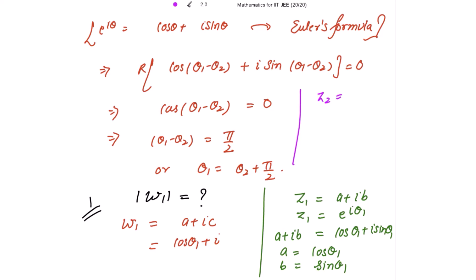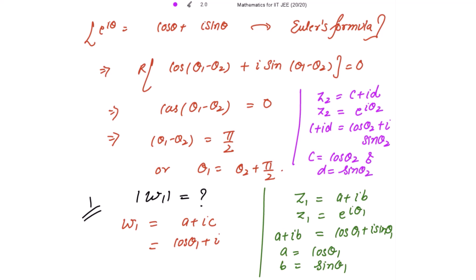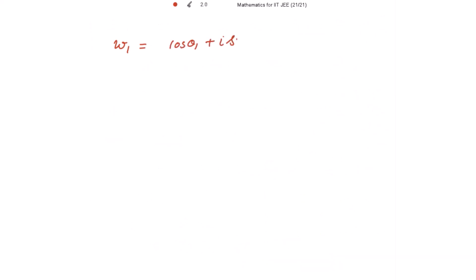Similarly, for z2 equal to c plus iota d with mod z2 equal to 1, z2 equals e to the power iota theta 2, so c plus iota d equals cos theta 2 plus iota sine theta 2. Thus c equals cos theta 2 and d equals sine theta 2. Now using theta 2 equals theta 1 minus pi by 2, we get c equals cos(theta 1 minus pi by 2) equals sine theta 1. So w1 equals cos theta 1 plus iota sine theta 1.